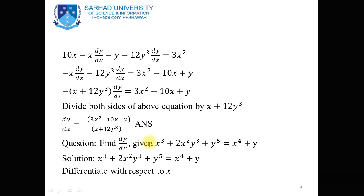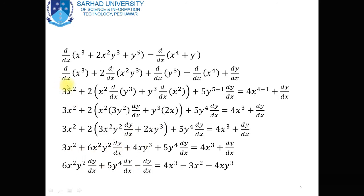Another implicit function: x³ + 2x²y³ + y⁵ = x⁴ + y. Taking the derivative with respect to x: derivative of x³, derivative of 2x²y³, derivative of y⁵ on the left equals derivative of x⁴ and derivative of y on the right.